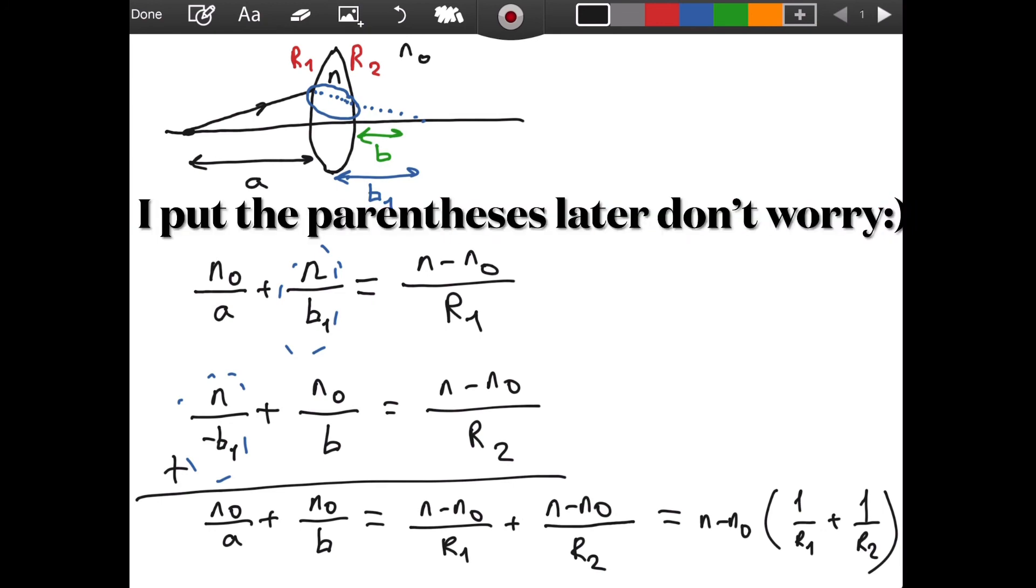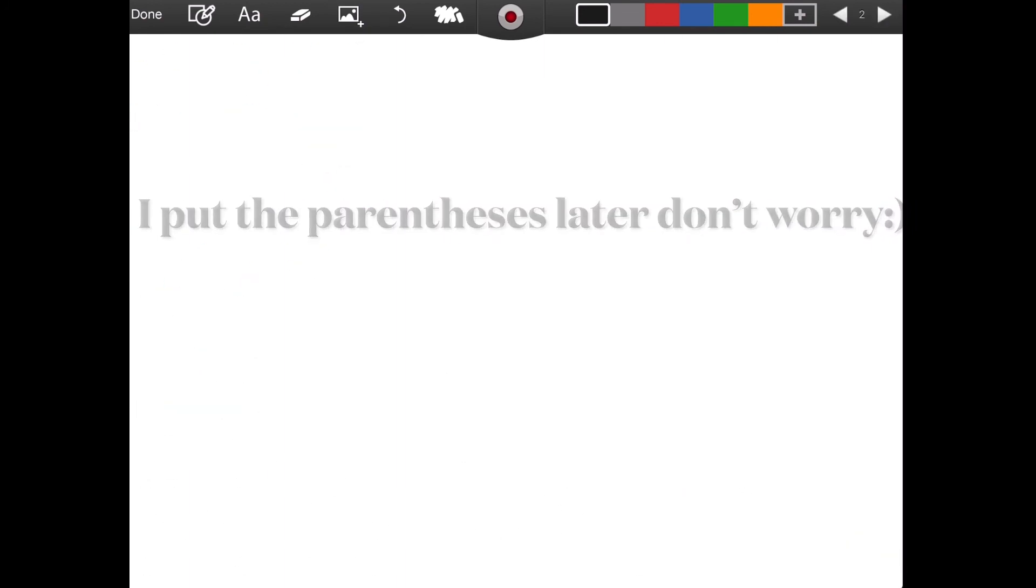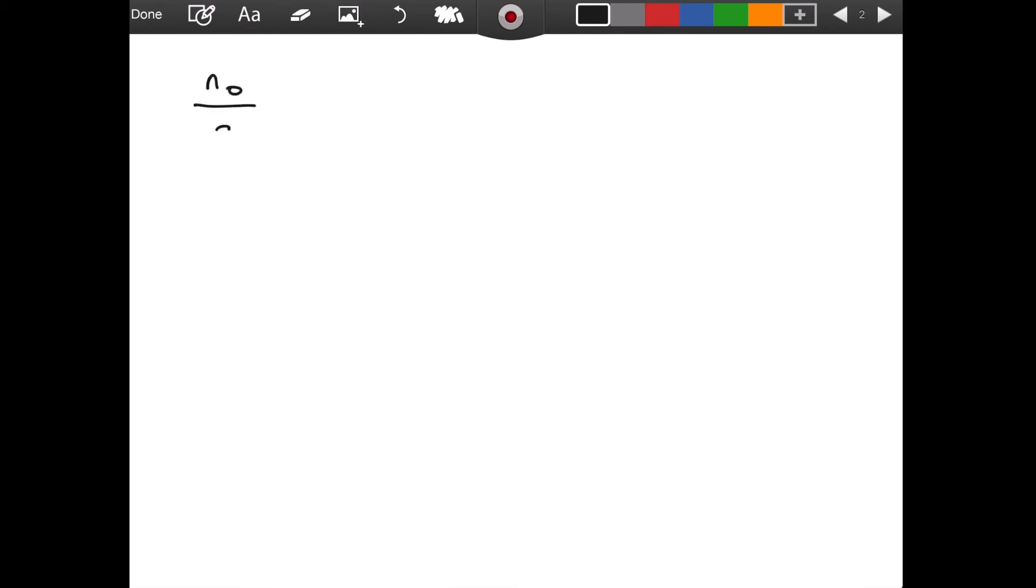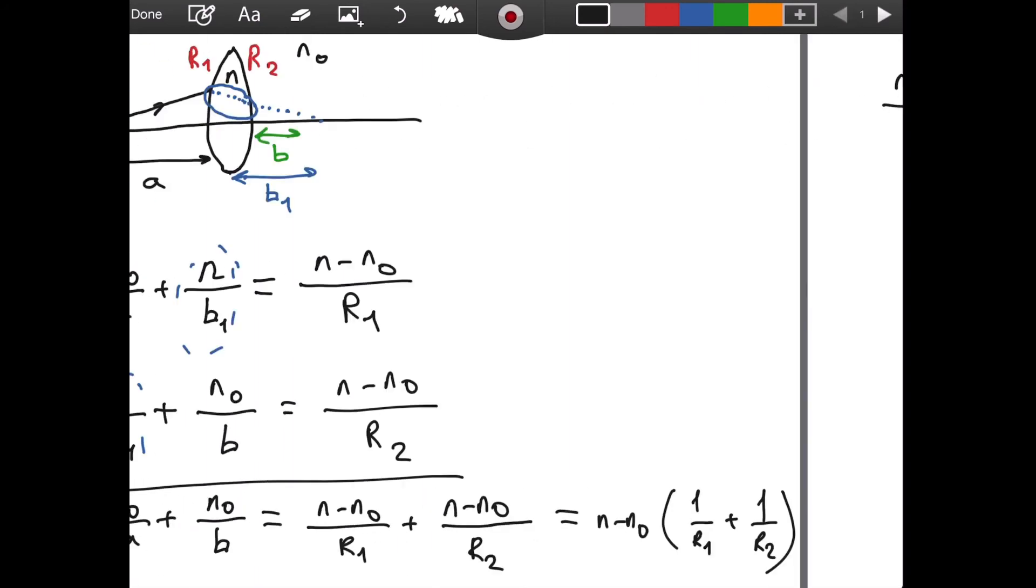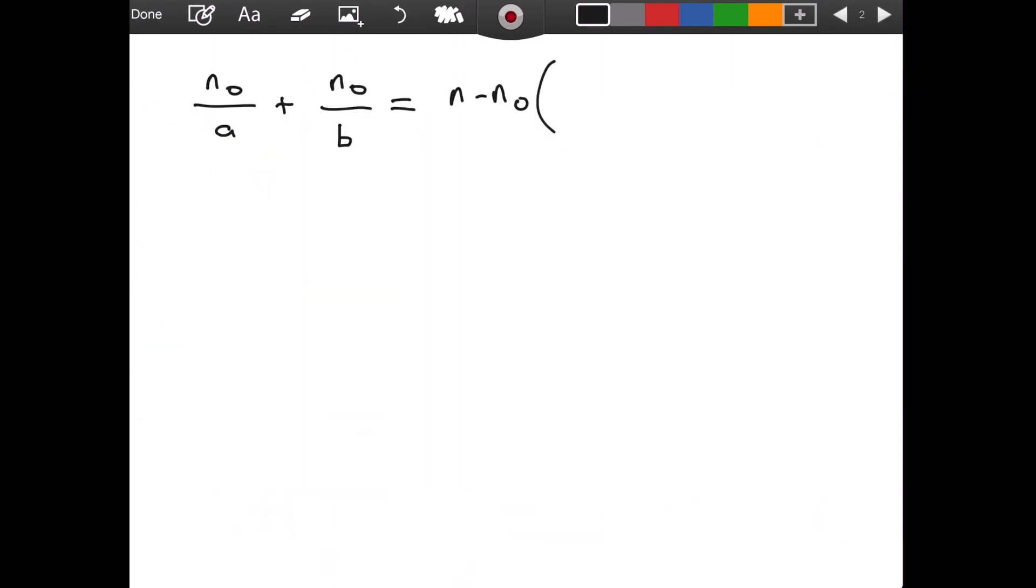So, let me write this result on a new page. So, we will have n₀ divided by a plus n₀ divided by b is equal to n minus n₀, as you can see here. And, then, we have the sum of the reciprocals of the radii of curvature. Great.